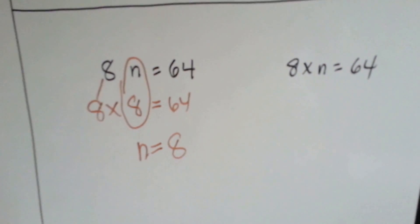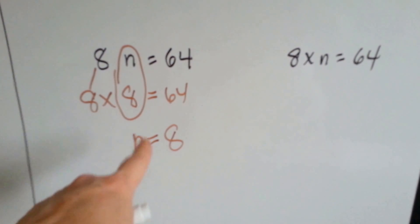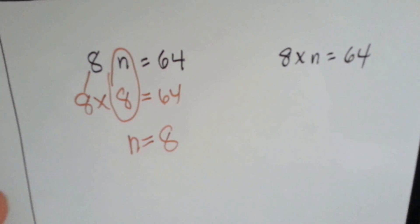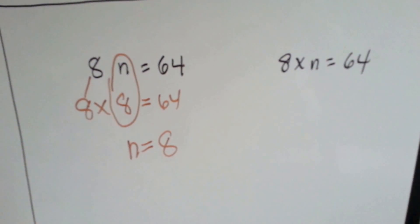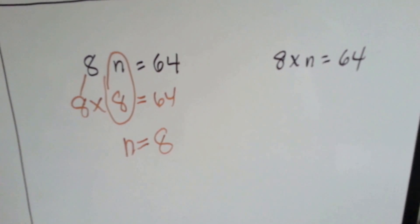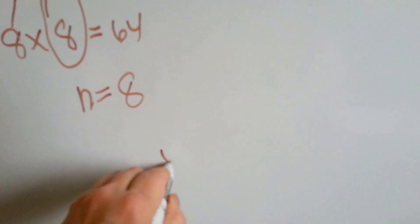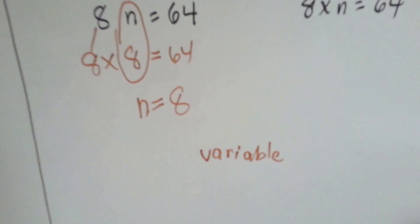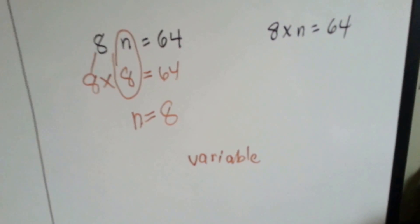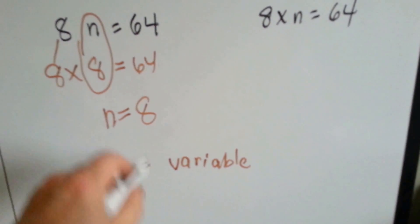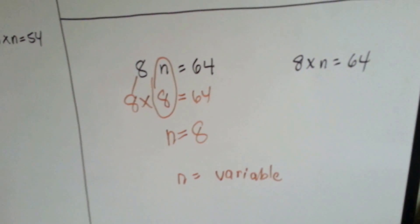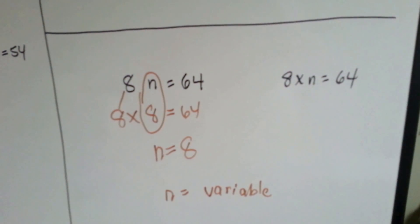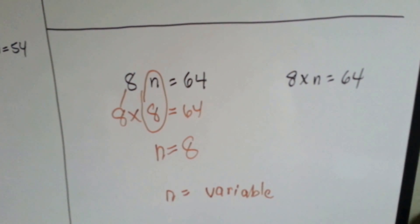When we do algebra, we replace the number we're trying to find with an n, or an x, or a z, or a q, or a letter of the alphabet, and then we call it a variable. The variable. The variable takes the place of the missing number. See? So, n is our variable, and in this case, it's eight. Eight times eight is sixty-four. Eight times a number equals sixty-four. The number is eight.